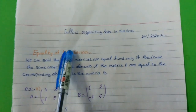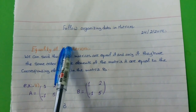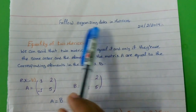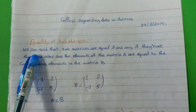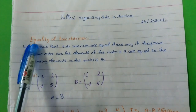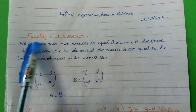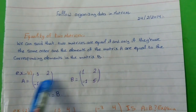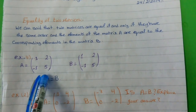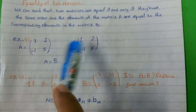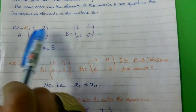Good morning students. Today we are going to complete lesson one about organizing data in matrices. First of all, we are going to take the meaning of equality of two matrices. When can we say that two matrices are equal? When all of the elements in the first matrix equal all of the elements in the second matrix.